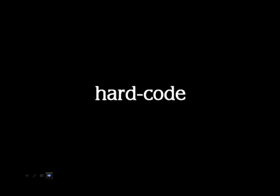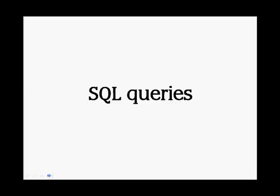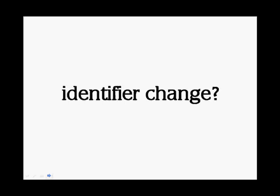Tried and true recipe number 3 is to hard-code everything. All products don't behave exactly the same in this respect, but if you want to hit a record particularly hard, this is a very good idea. When SQL queries are built by a program using simple concatenation, what happens when the value of an identifier changes?